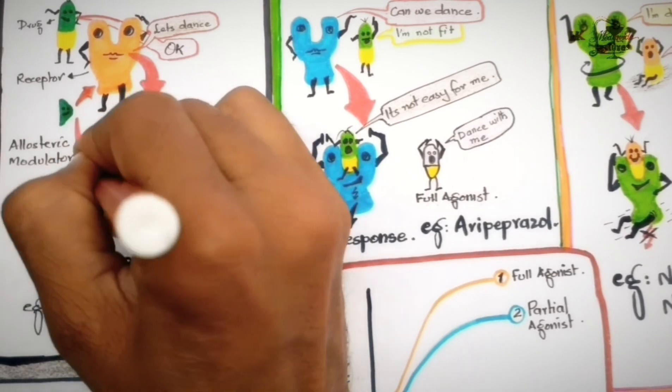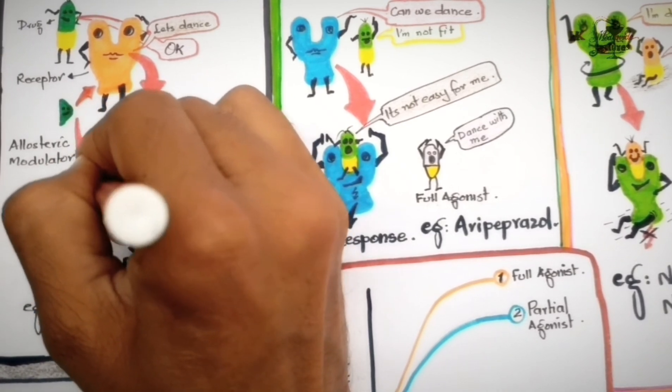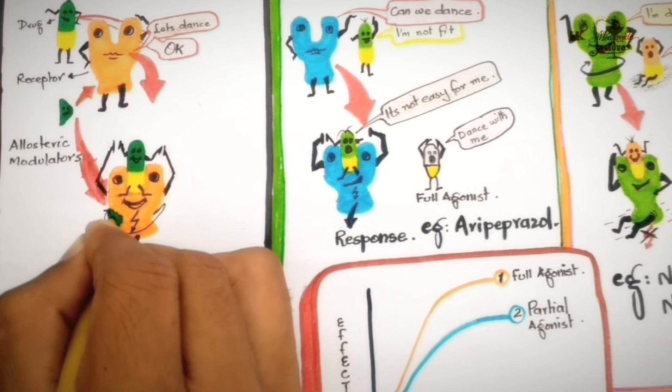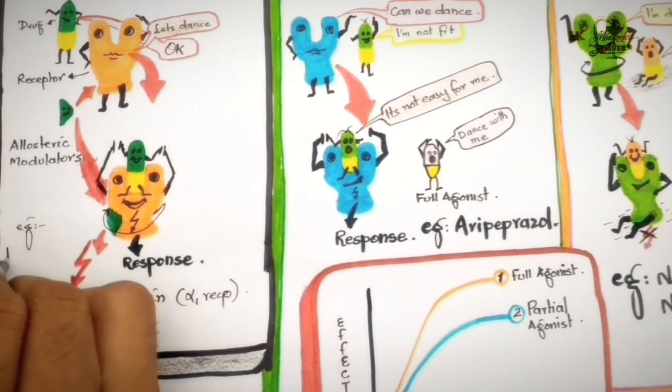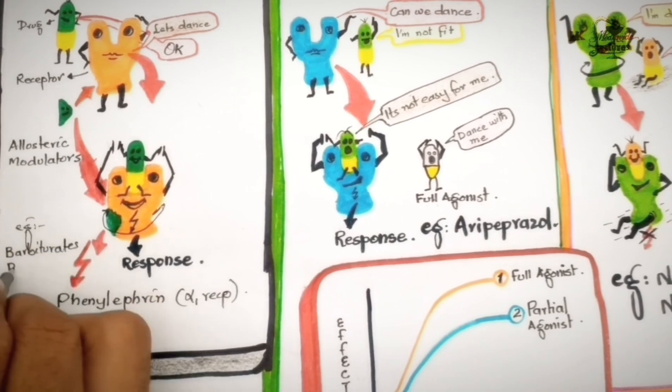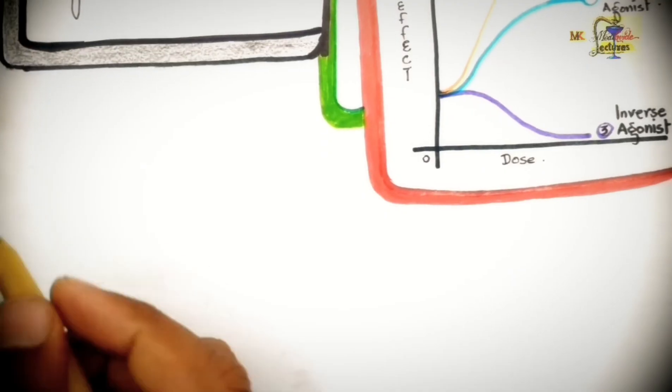The last rare type of agonists is allosteric modulators which bind to the receptor other than the drug binding site and activate the receptor. Drugs like barbiturates and benzodiazepines show this kind of activity.